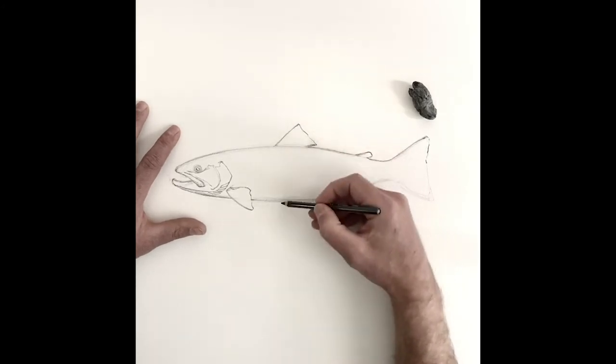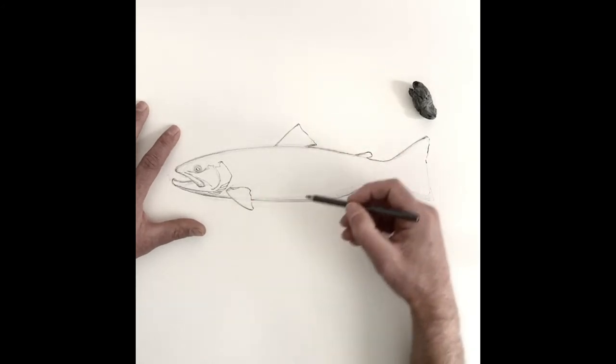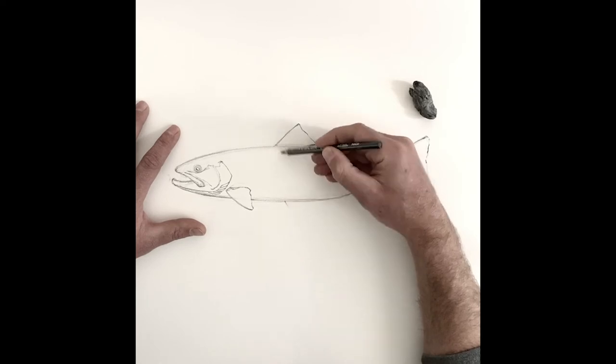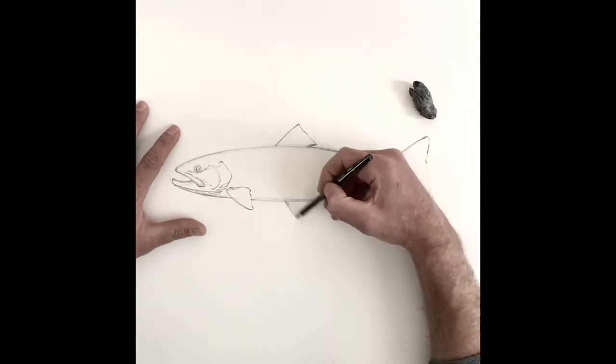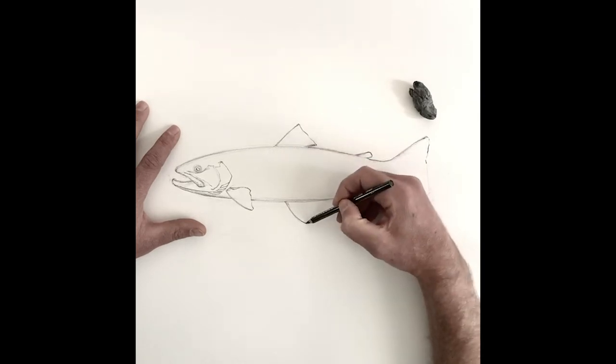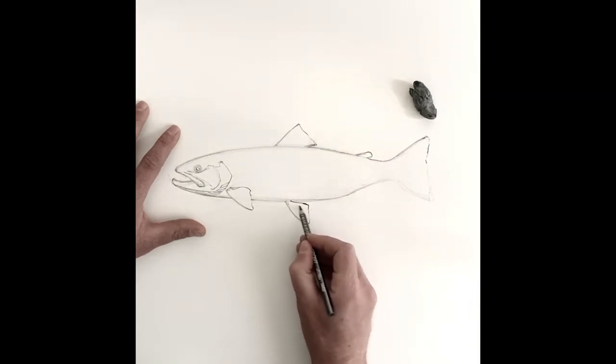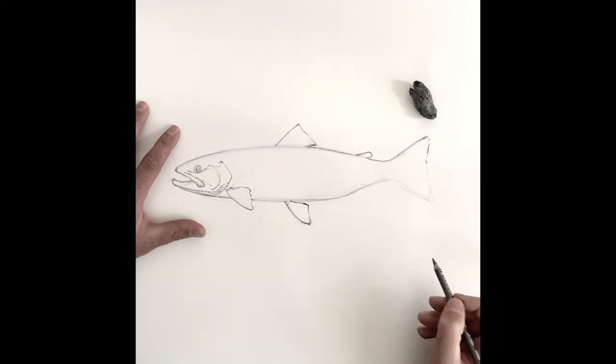And then the pelvic fins, it's a set, it's a pair like the pectoral fins, there's one on each side. It's going to be right in behind the front of the dorsal kind of central dorsal somewhere. And they can change shape depending once again on how the fish is holding them. But that's like a kind of relaxed downward pelvic fin.